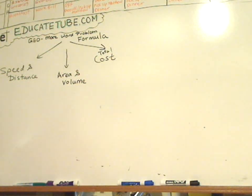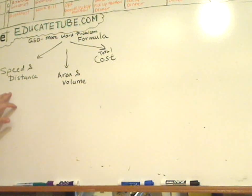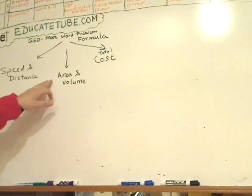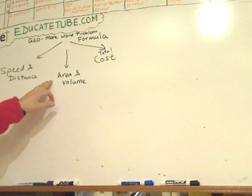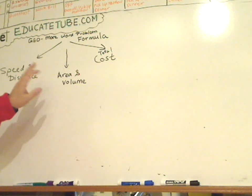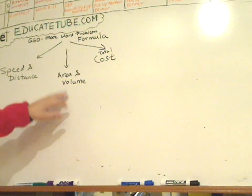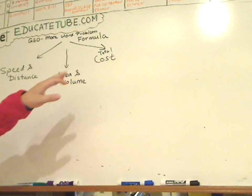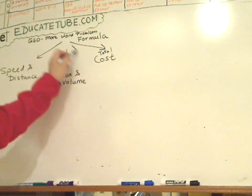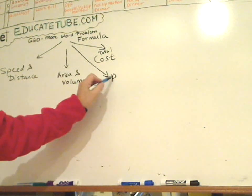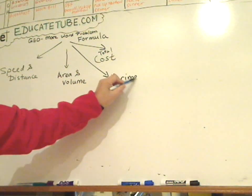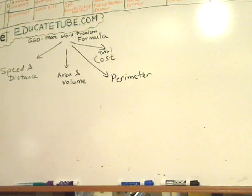Let's continue with our lesson on formulas. I talked about speed, distance, and area. There are some other area formulas I'll maybe talk about in the future, like the area of the trapezoid. But let's continue with volume and total cost — and I'll also talk about perimeter. So let's focus on volume for now.